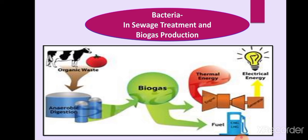Bacteria are also helpful in sewage treatment and biogas production. Both aerobic and anaerobic bacteria are used in sewage treatment. When anaerobic bacteria treat sewage — which contains household waste, soap, detergents, and factory chemicals — methane gas is produced from the degradation of plant and animal materials. This methane gas is the biogas used as fuel.